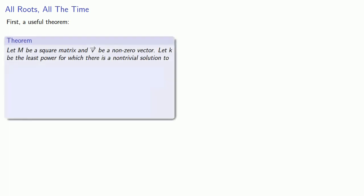And so we'll introduce a useful theorem. Suppose M is a square matrix and v is a nonzero vector, and let k be the least power for which there is a non-trivial solution to linear combination equal to the zero vector. Then, all roots of this minimal polynomial are eigenvalues. And the proof of that is relatively straightforward.